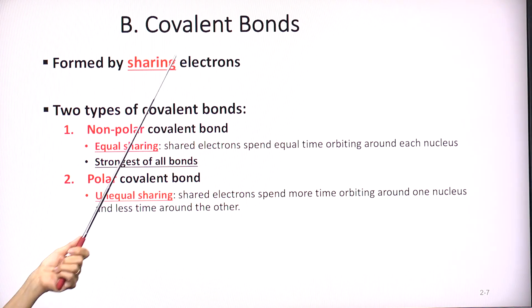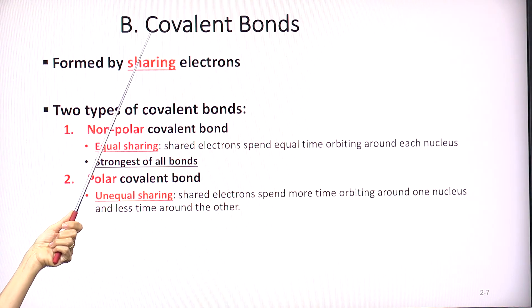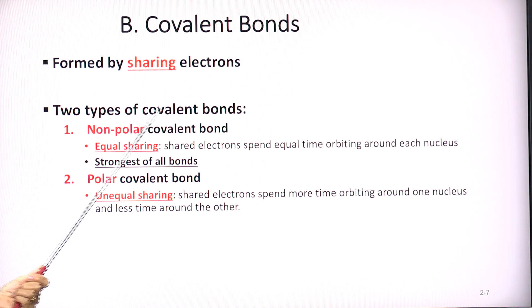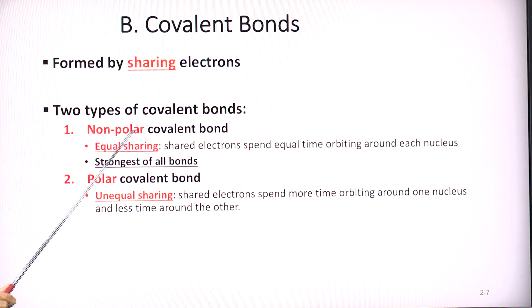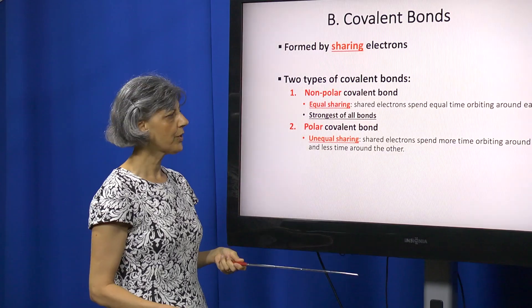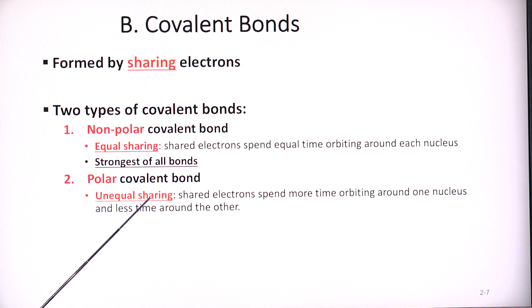Our second bond is the covalent bond. Think of the word 'co' — they cooperate, they share. Covalent bonds are made by sharing of electrons. There are two types: if the sharing is equal, we call this a non-polar covalent bond, where the shared electrons spend equal time between the two atoms. This is the strongest of all the chemical bonds we'll discuss. In a polar covalent bond, there is unequal sharing.